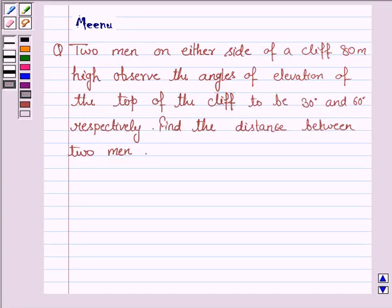Hello and welcome to the session. Let's work out the following problem. It says, two men on either side of a cliff 80 meter high observe the angles of elevation of the top of the cliff to be 30 degrees and 60 degrees respectively. Find the distance between two men.